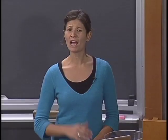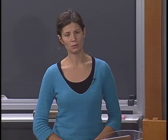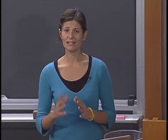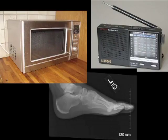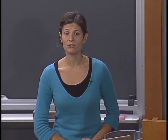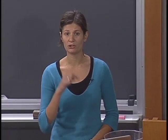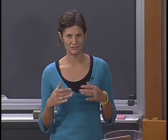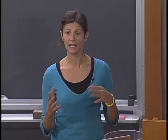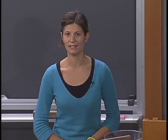Why are we talking about waves? Well, light is an electromagnetic wave. Other electromagnetic waves include microwaves, radio waves, and x-rays, for example. Electromagnetic waves originate from the oscillation of the electric and magnetic field. We cannot see this field oscillating, but we can see the resulting light.